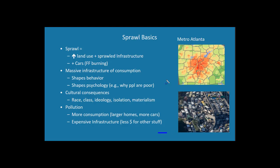Some sprawl basics. Sprawl is a way of using land that sprawls out your infrastructure — your roads, your sewer, your police and fire and all that kind of stuff — so that you also have a lot more cars burning fossil fuels.